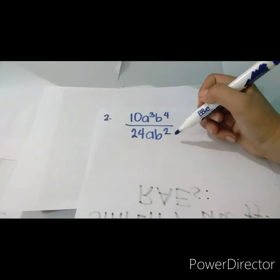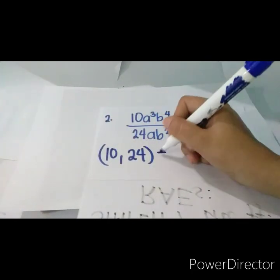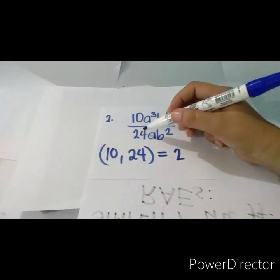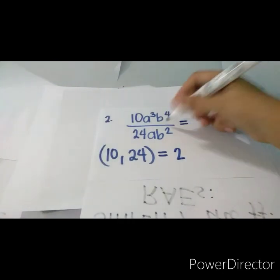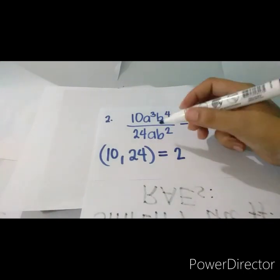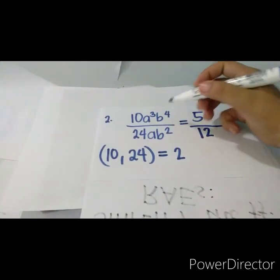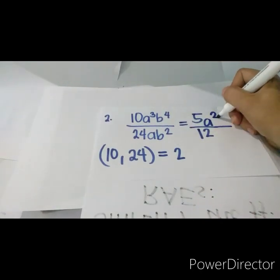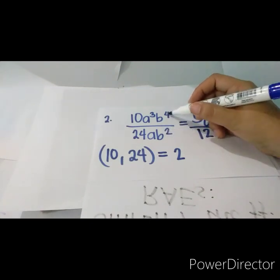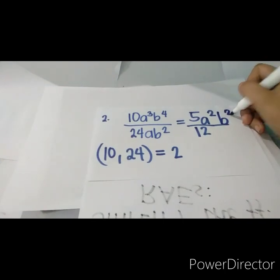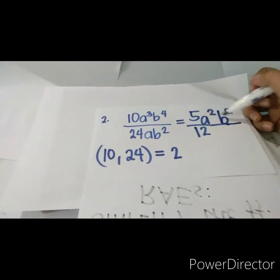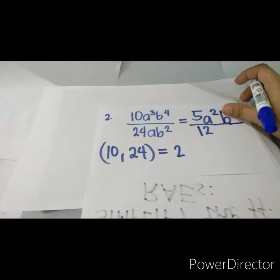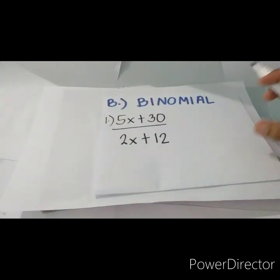The second monomial example is 10a cubed b to the power of 4 over 24ab squared. Same procedure: identify the GCF of 10 and 24, which is 2. Divide: 10 divided by 2 is 5, and 24 divided by 2 is 12. For the variables: a cubed divided by a gives a squared (3 minus 1 is 2), and b to the fourth divided by b squared gives b squared (4 minus 2 is 2). The final answer is 5a squared b squared over 12.